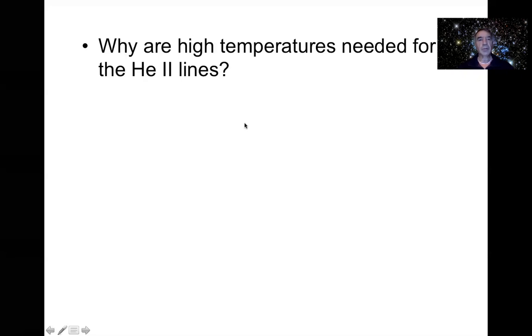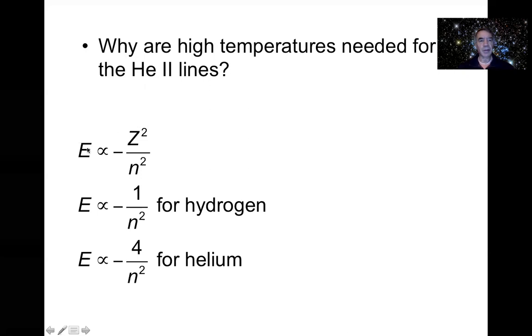We're looking at this issue of why high temperatures might be needed for the helium two lines. This isn't core to this module really, but allows you to apply a little bit more physics. Hopefully you're familiar with this idea - the Rydberg formula for hydrogen really, but the idea that the energy levels are proportional to one over n squared. But for hydrogen-like ions, you've also got the charge of the nucleus. So for hydrogen that's one obviously, but for helium, the helium two ion, this number is four.